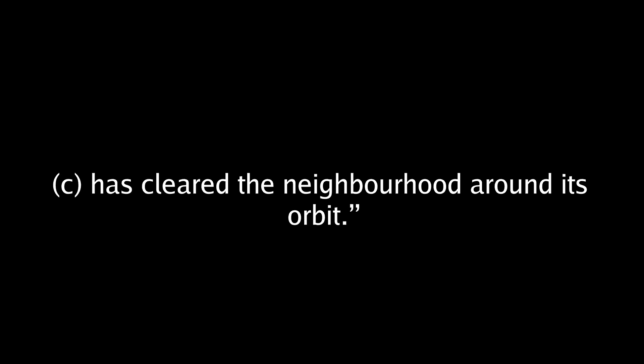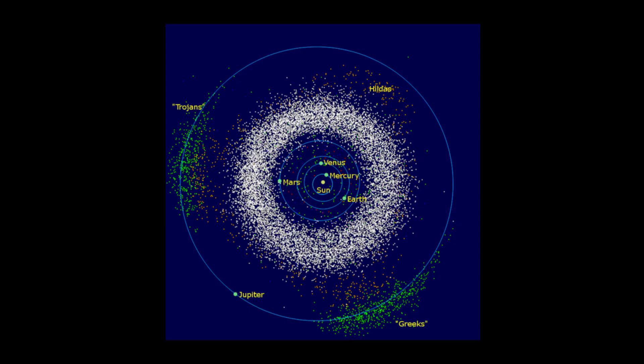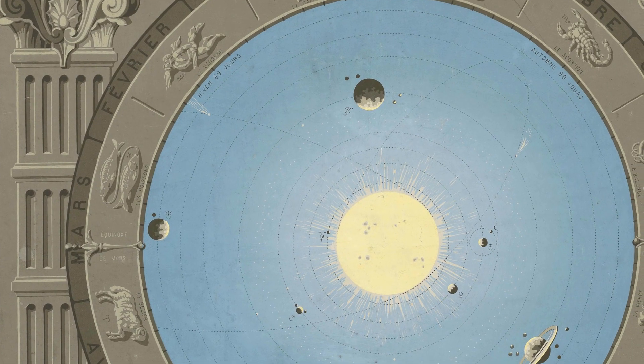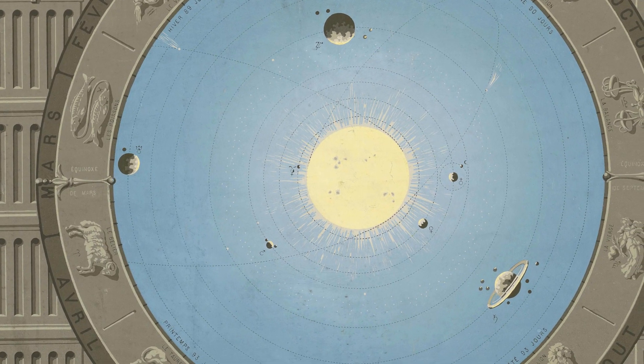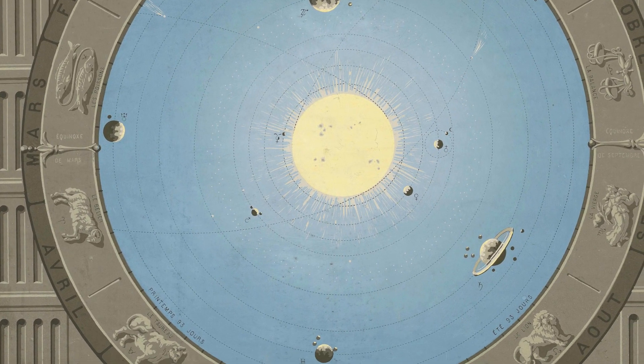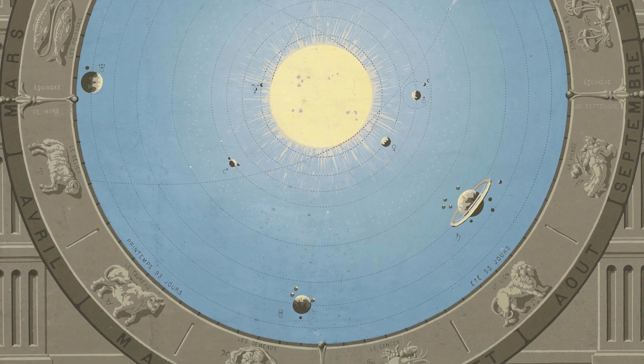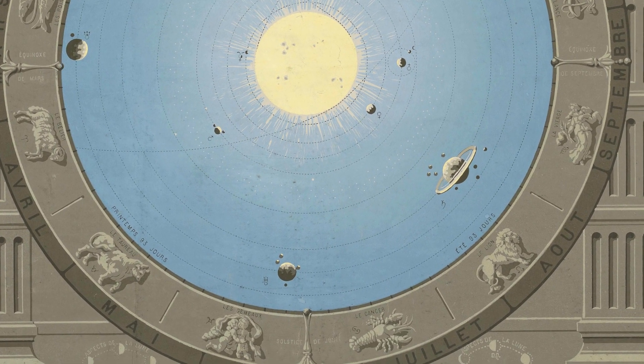What does 'has cleared its neighborhood around its orbit' supposed to mean? Planets have a tendency to trap objects in its orbit 60 degrees in front and 60 degrees behind in what's known as the L4 and L5 Lagrange points respectively. Jupiter has thousands of asteroids in its Lagrange points. And Uranus, Neptune, Earth, and Mars also have objects in the Lagrange points. There is also the fact Pluto intersects the orbit of Neptune. Despite all this, all the planets are considered to be planets.